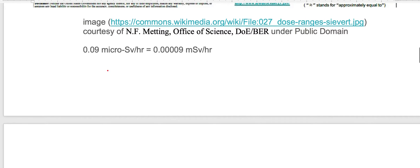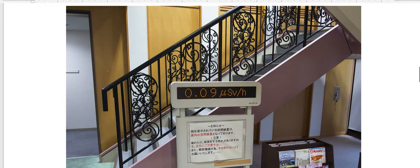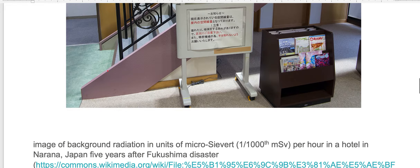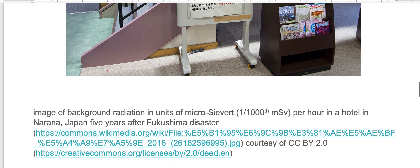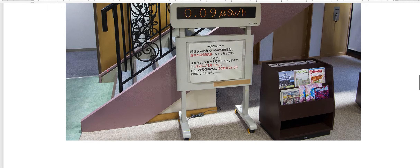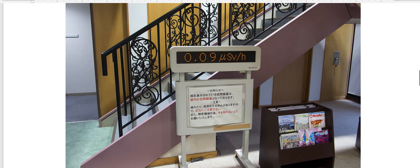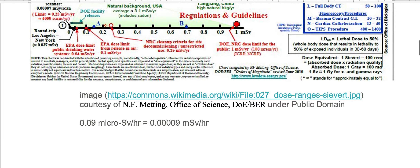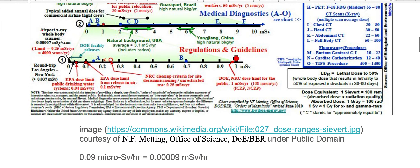Let's take a look at background radiation received at this hotel in Naraha, Japan. This hotel is nearby Fukushima, so we're looking at the rate received five years after the Fukushima disaster. The rate is being measured in microsieverts, and a human body is receiving 0.09 microsieverts per hour — the equivalent of a scan in an airport x-ray body scanner.